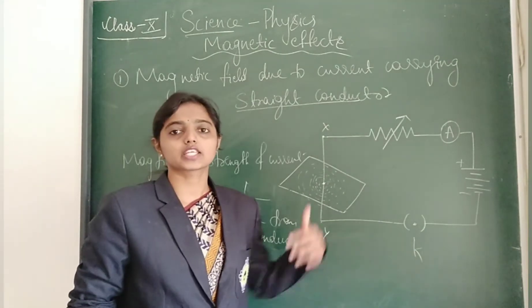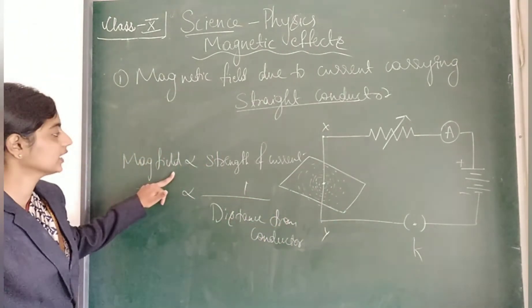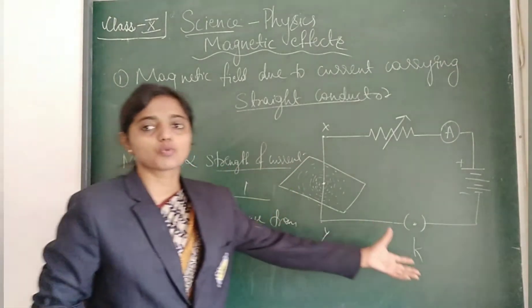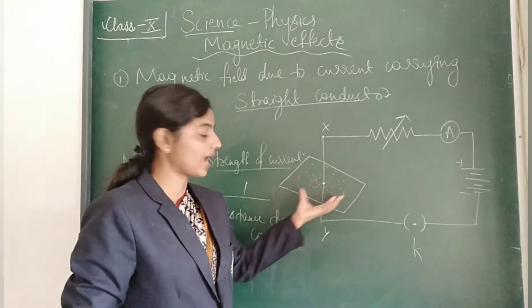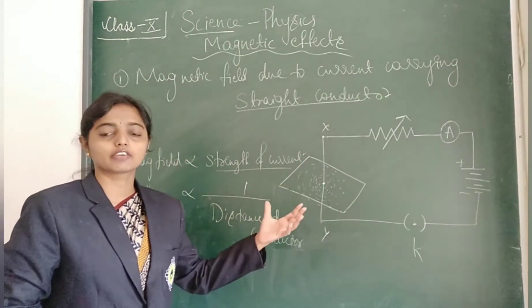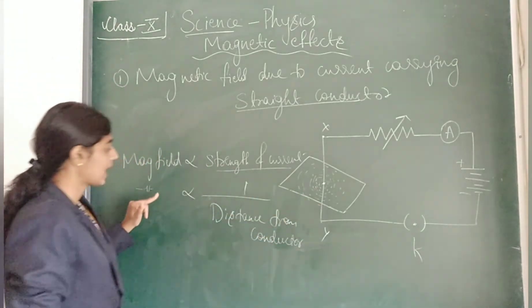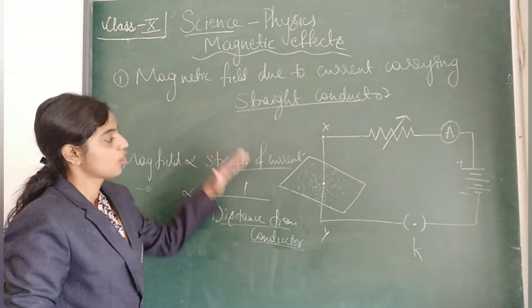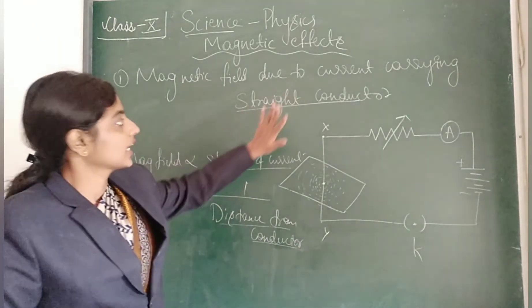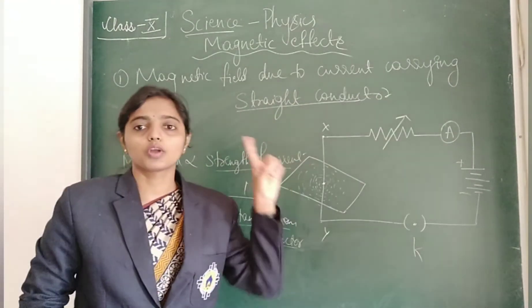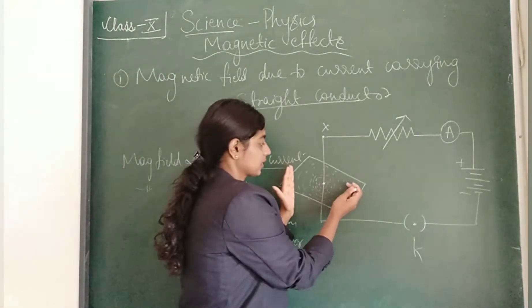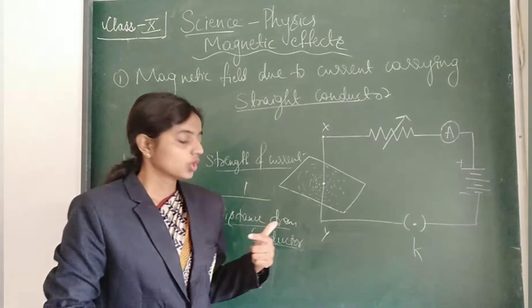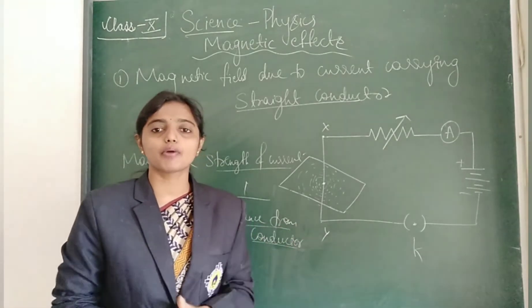From this explanation we can say that magnetic field is directly proportional to the strength of the current — if the current is more, we get more magnetic field lines, meaning the strength of the magnetic field is more. The magnetic field is inversely proportional to distance from the conductor. Once we have the magnetic field lines, the next step is to find the direction of the magnetic field lines.